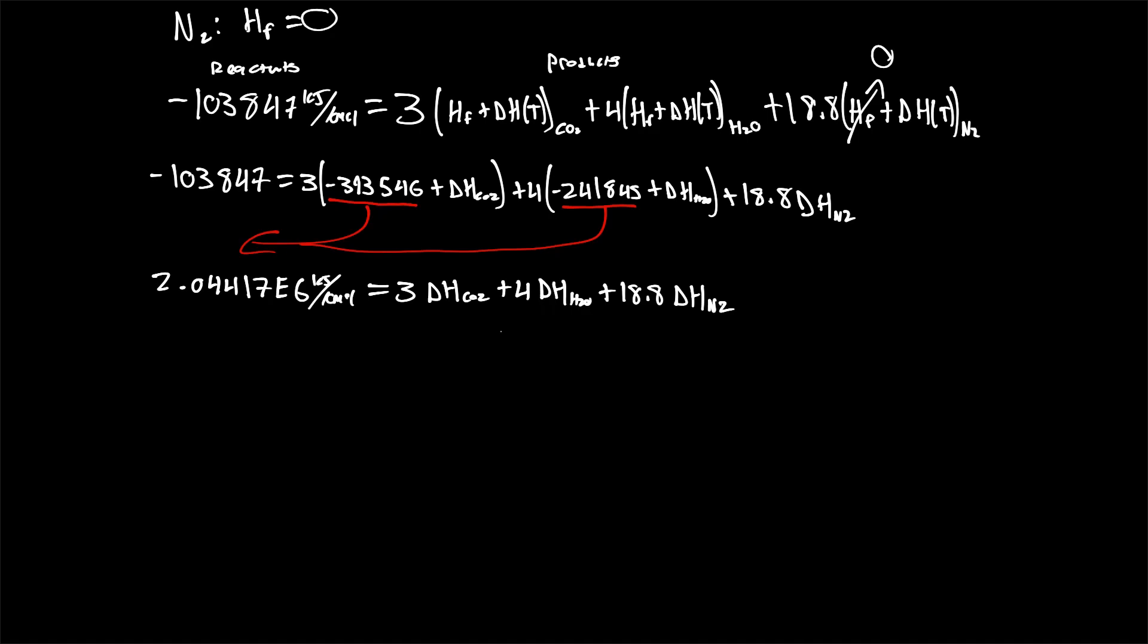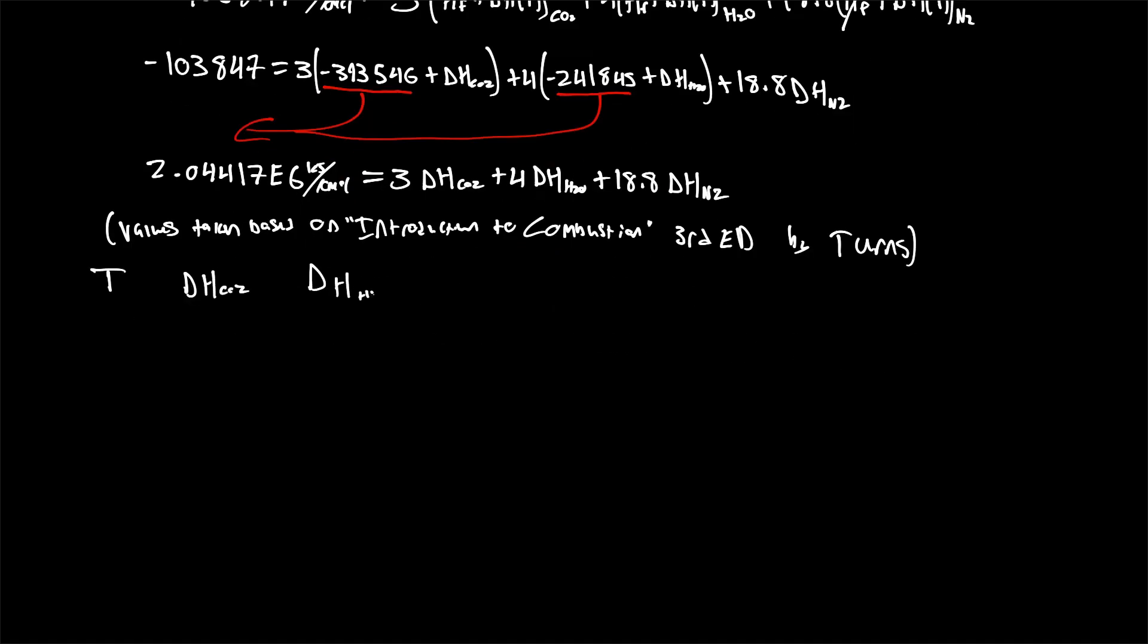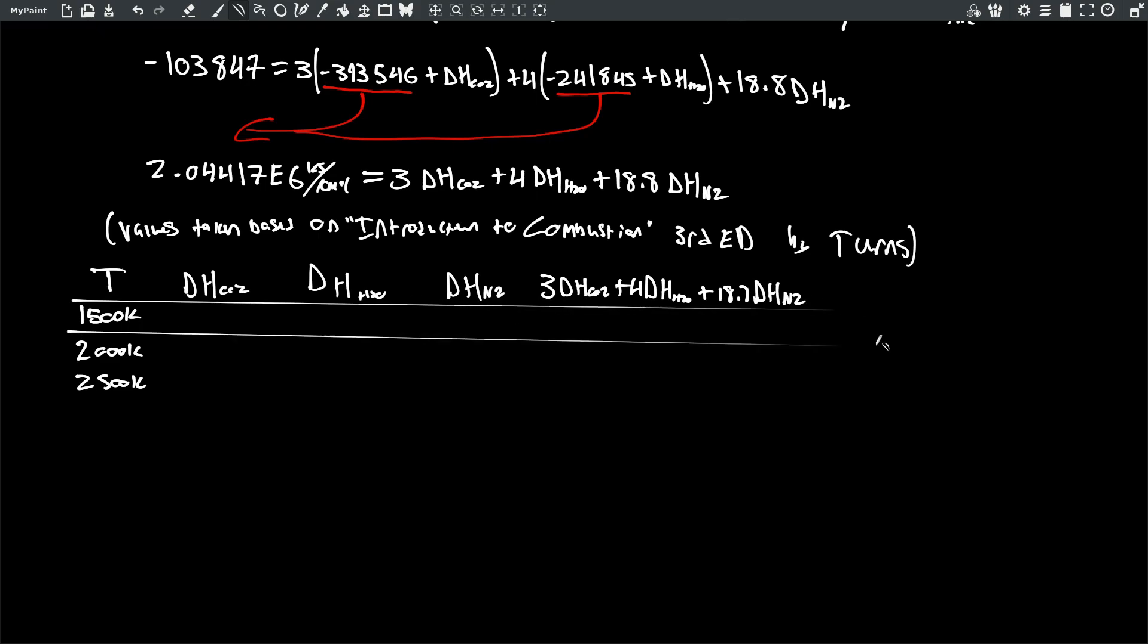So now we just need to figure out at what temperature the left-hand side equals the right-hand side, and therefore we would have our adiabatic flame temperature as defined by that constant enthalpy. So for this, we're going to be making a table based on some of the values in the tables at the back of that turns textbook that I mentioned earlier. So this is basically the equation that we have up here, 3 delta HCO2 plus 4 delta HH2O plus 18.8 delta HN2, and we're going to be getting these delta H values from the table.